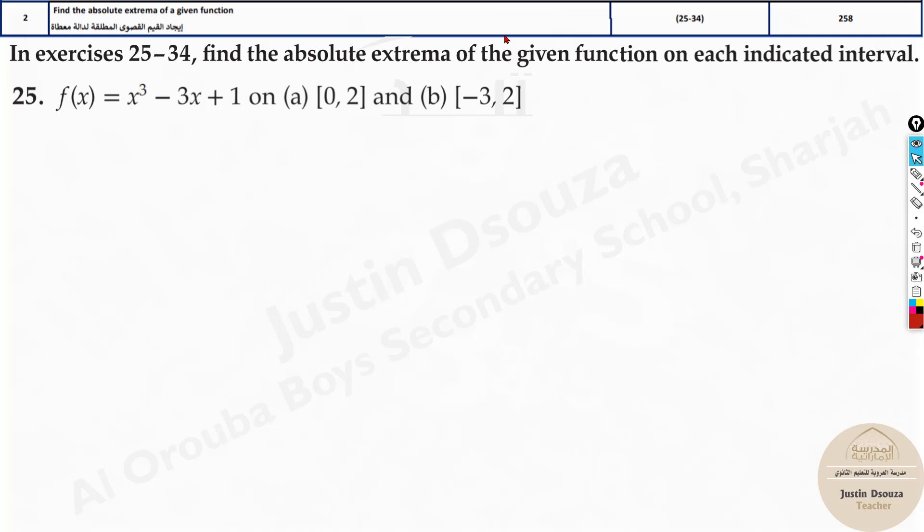Here we need to find the maximum or minimum points. They occur at critical numbers, so first we need to find the critical numbers of a function. f dash of x will be 3x squared minus 3. Now f dash of x becomes 0, it will be 3x squared minus 3.